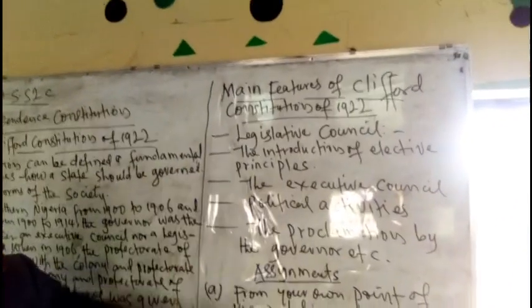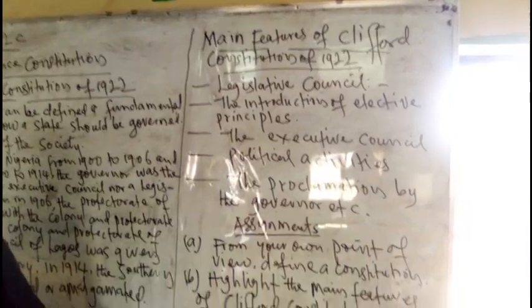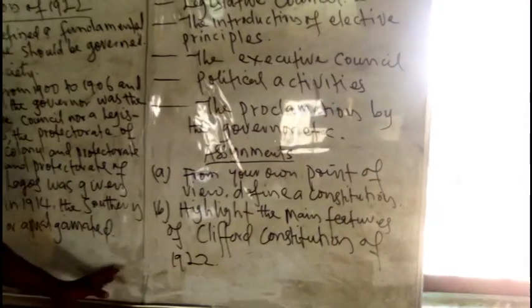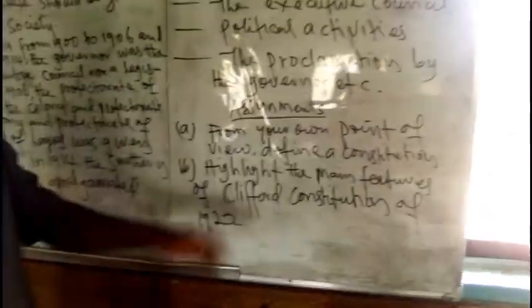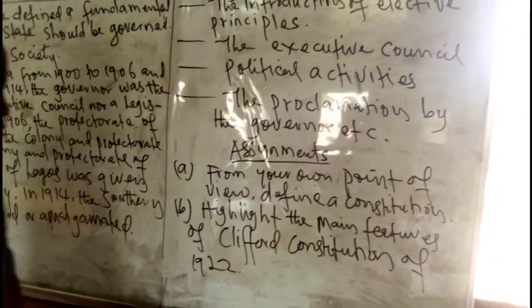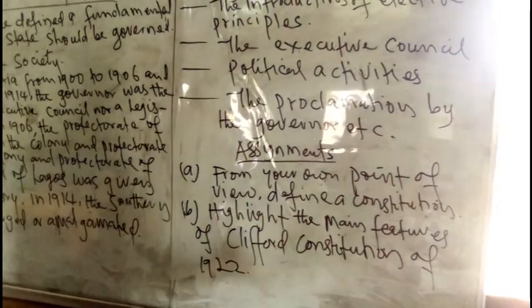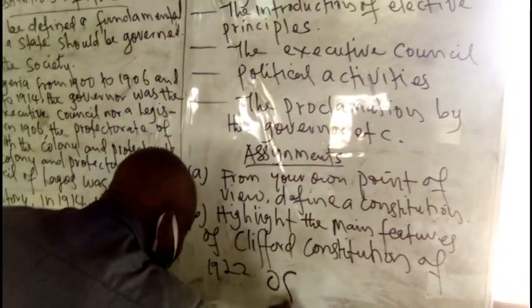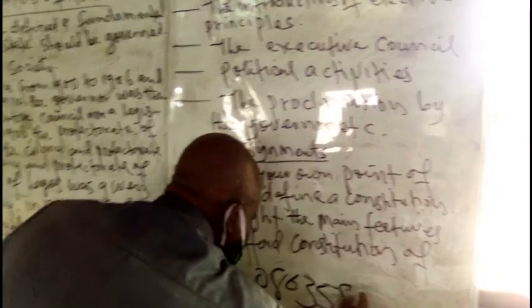Thank you very much. This is an assignment for you: Number one, from your own point of view, define the constitution. Number two, highlight the main features of the Clifford Constitution of 1922. You can contact me through this number: 35870188. Thank you very much and God bless you.